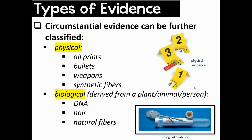Remember, all circumstantial evidence can be further classified as either physical or biological. There's not a specific definition for physical evidence, but you need to know that physical evidence includes all prints — fingerprints, lip prints, toe prints, palm prints. All prints are physical. Bullets, weapons, and synthetic fibers are also considered physical evidence. Biological evidence is going to be derived from a plant, an animal, or a person. So DNA, hair, and natural fibers like cotton, hemp, or burlap are all considered biological evidence.